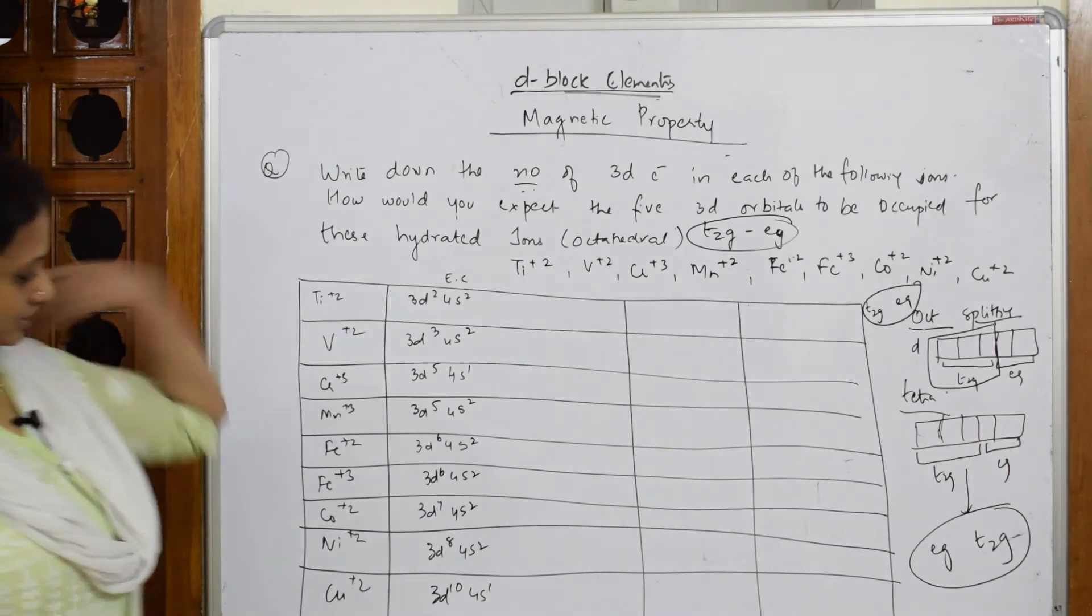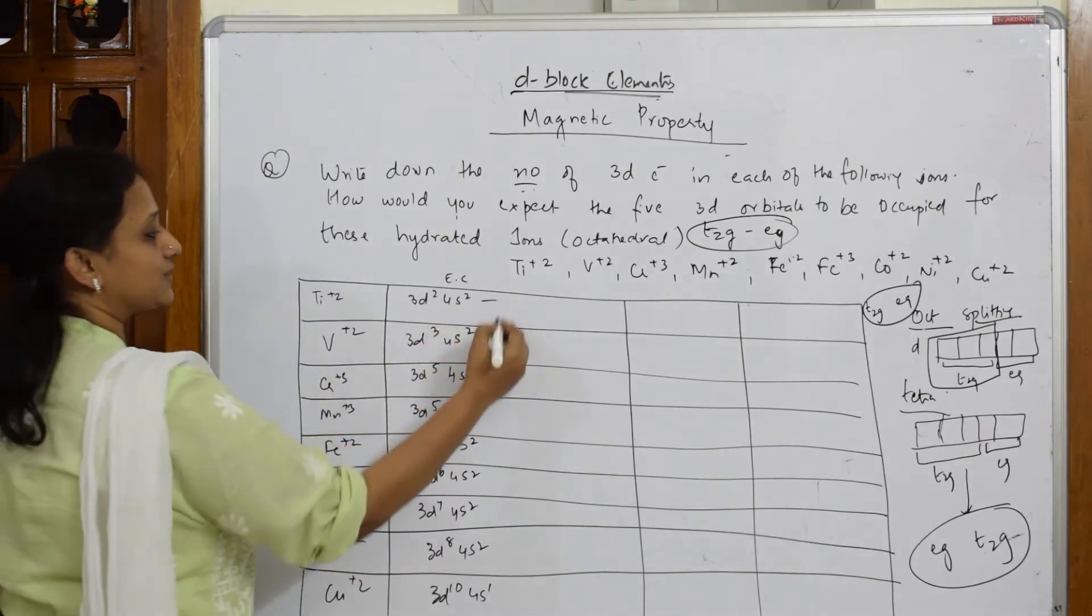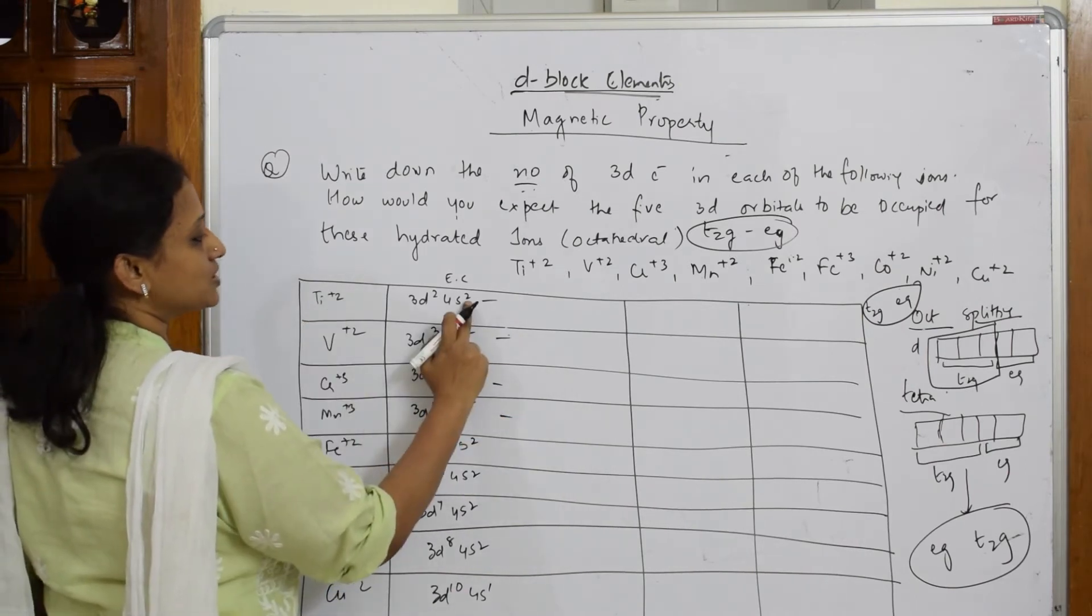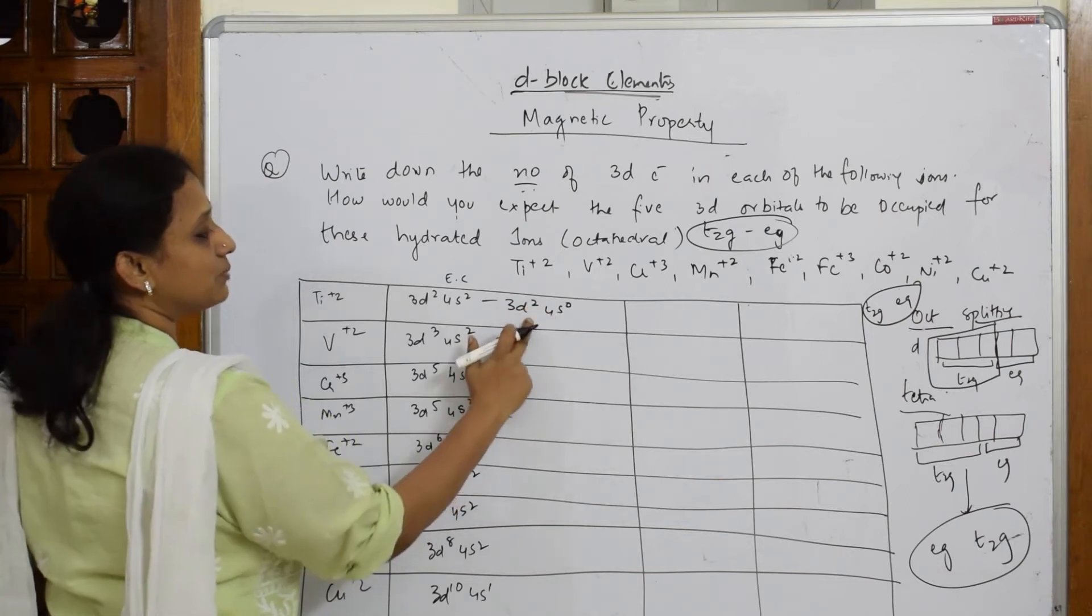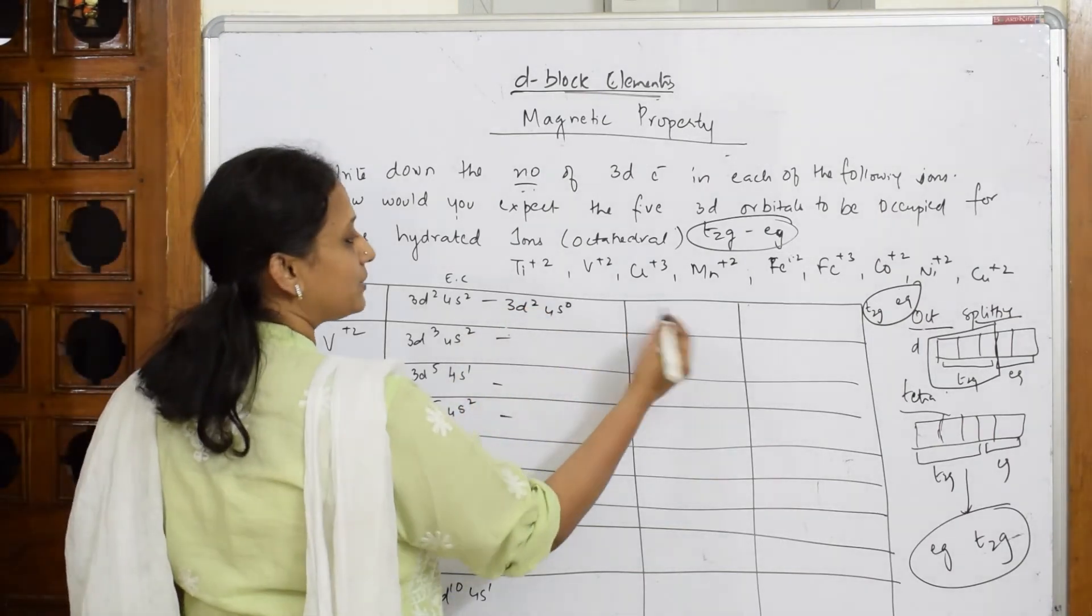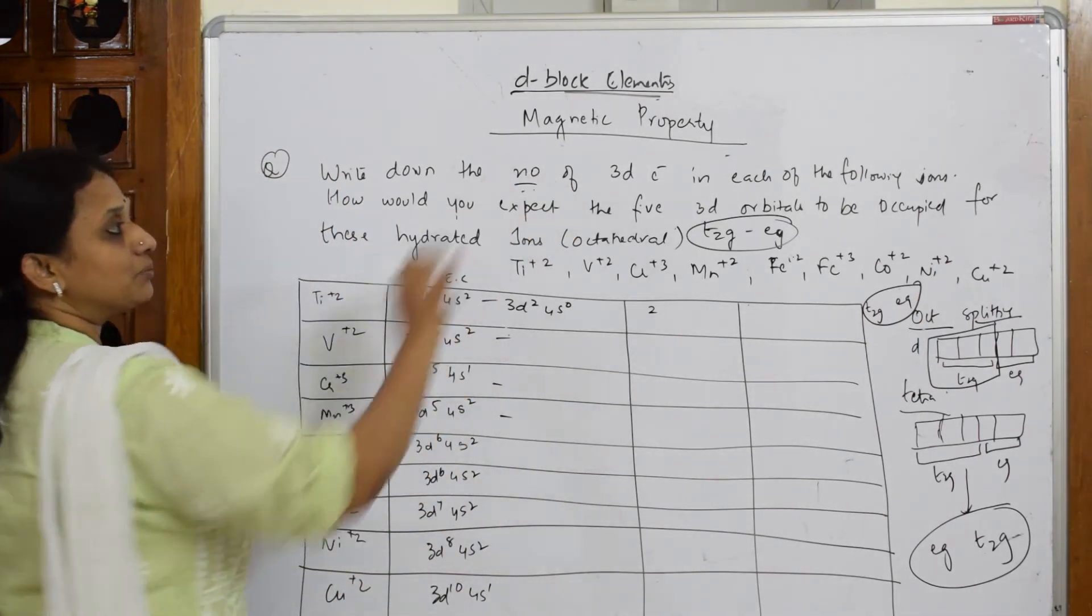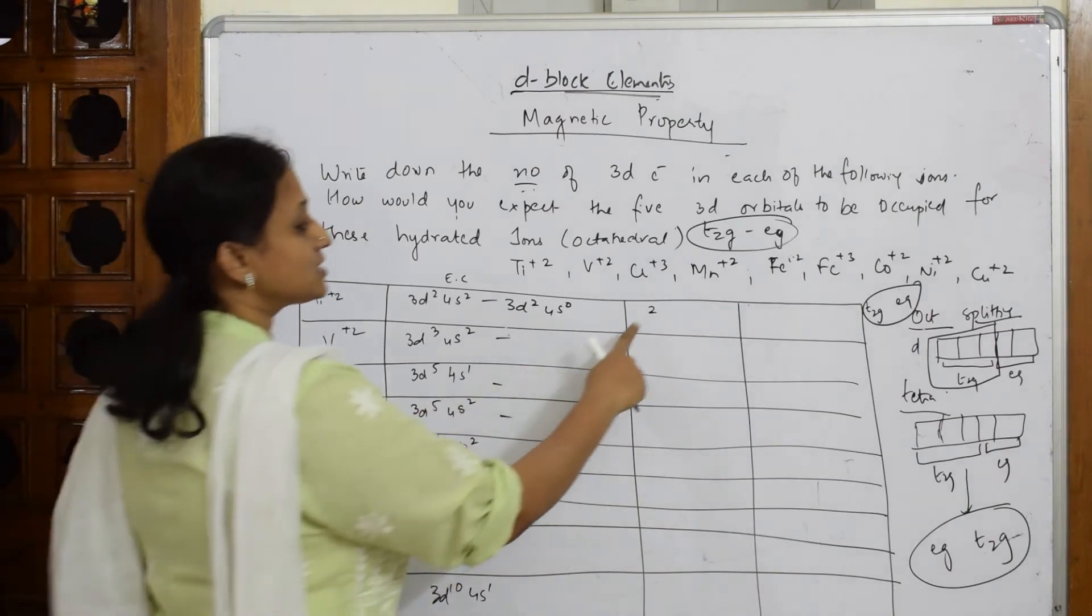Now this ion is given to me. I have written the electronic configuration to save time. It's easy for me to take out and do the numerical fast. I had to take out 2 plus 2. Remove plus 2 from here. This becomes 3D² 4S⁰. The number of unpaired electrons are how many? 2. Correct? Because they have asked me to find the number of d electrons. So the number of d electrons are 2.